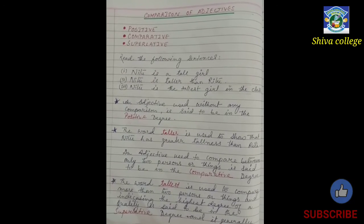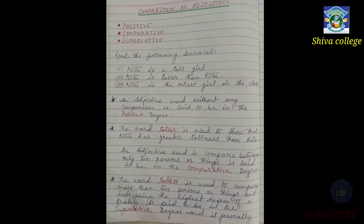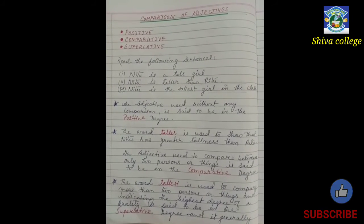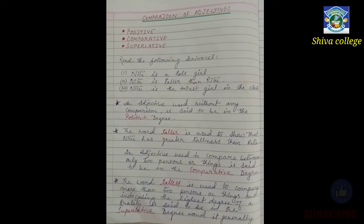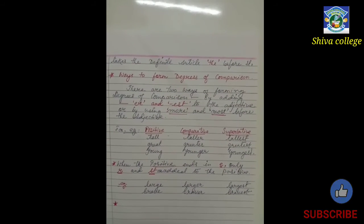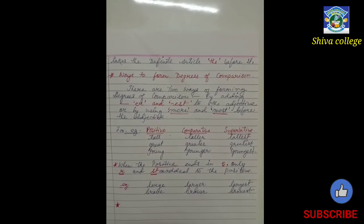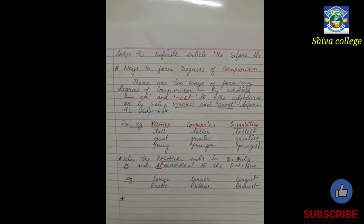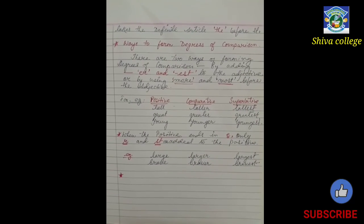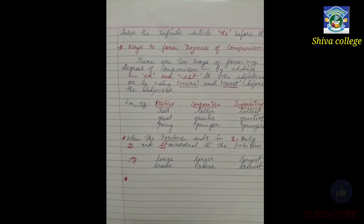The word 'tallest' is used to compare more than two persons or things, indicating the highest degree of quality, and is said to be in the superlative degree. It generally takes the definite article 'the' — just as 'than' is used in the comparative degree, 'the' is used before the superlative form. As in 'Nitu is the tallest girl', the word 'the' appears before the adjective 'tallest'.